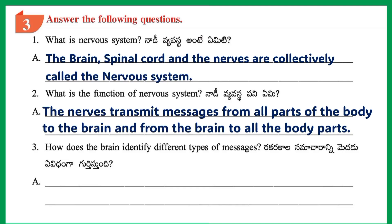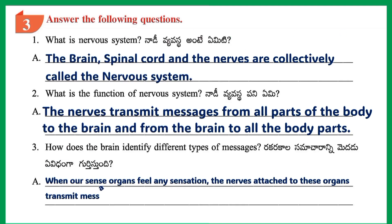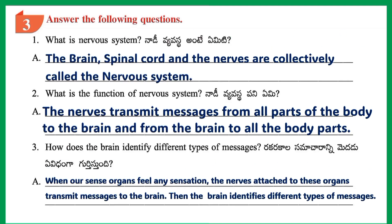Question 3: How does the Brain identify different types of messages? Answer: When our sense organs feel any sensation, the nerves attached to these organs transmit messages to the brain. Then the brain identifies different types of messages.